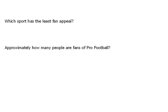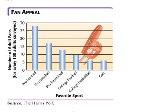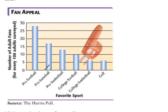Let's look at this particular bar graph and see what's going on. This is talking about fan appeal. Along the bottom we have our categories — these are the different sports. The titles on the horizontal and vertical axes always tell us what's going on, so those are very important. This is listing out our sports: we have football, baseball, basketball, college football, college basketball, and golf. Along the vertical it says these are the number of adult fans, for every 100 adults surveyed. So they asked 100 people, and these are the number of people who said they enjoy each one of these categories.